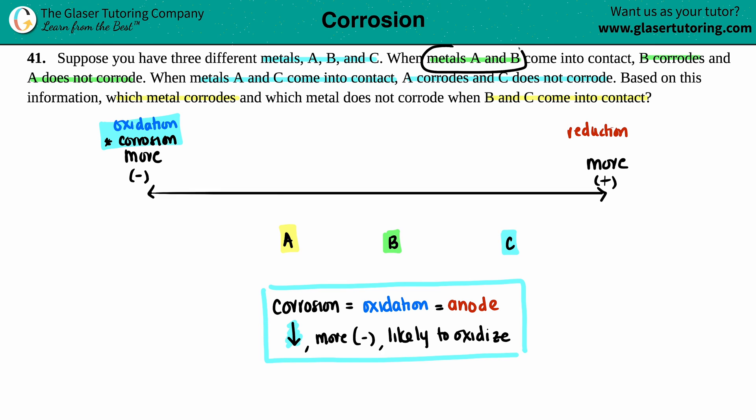Well, let's see when metal A and B come into contact, B corrodes and A does not. So with that sentence on the number line, if I put A over here, let's put A in the middle of the playing field. If B is corroding, is B going to be lower or higher than A?